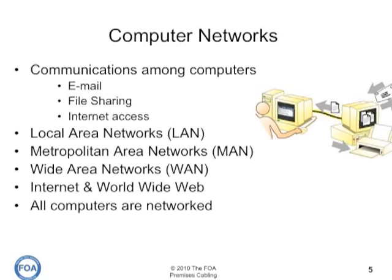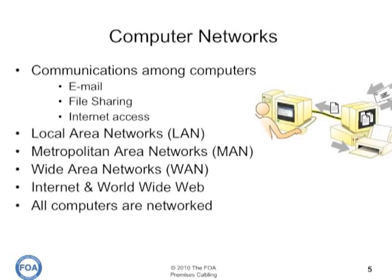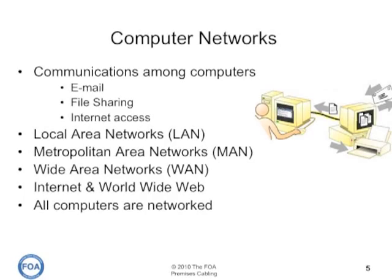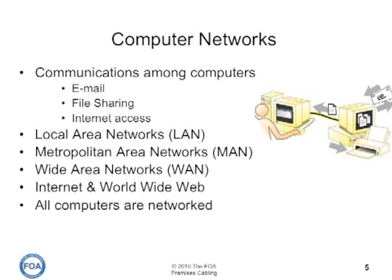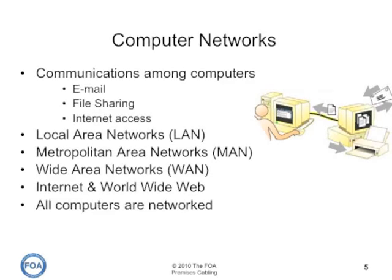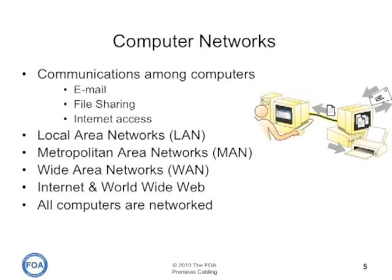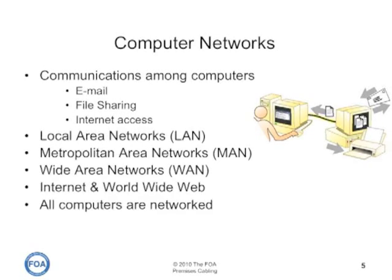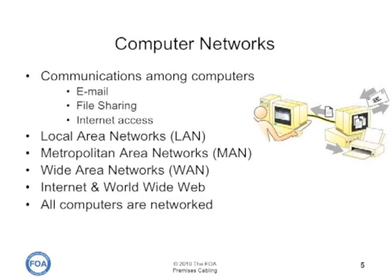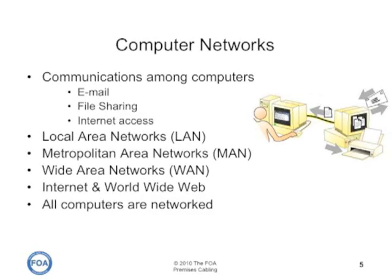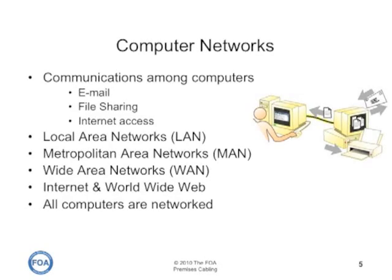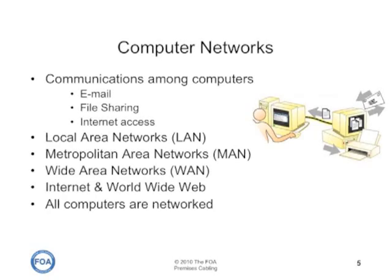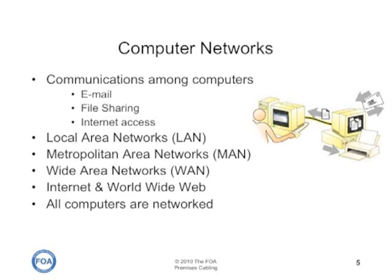Computer networks came into widespread use with the proliferation of PCs. They allowed communications among computers for email, file sharing, or internet access. Typically in a premises system we have what we call a local area network, or LAN. But there are metropolitan area networks that work in cities, and wide area networks like the internet or the worldwide telephone system. Essentially, all computers are networked and are used as communications devices.